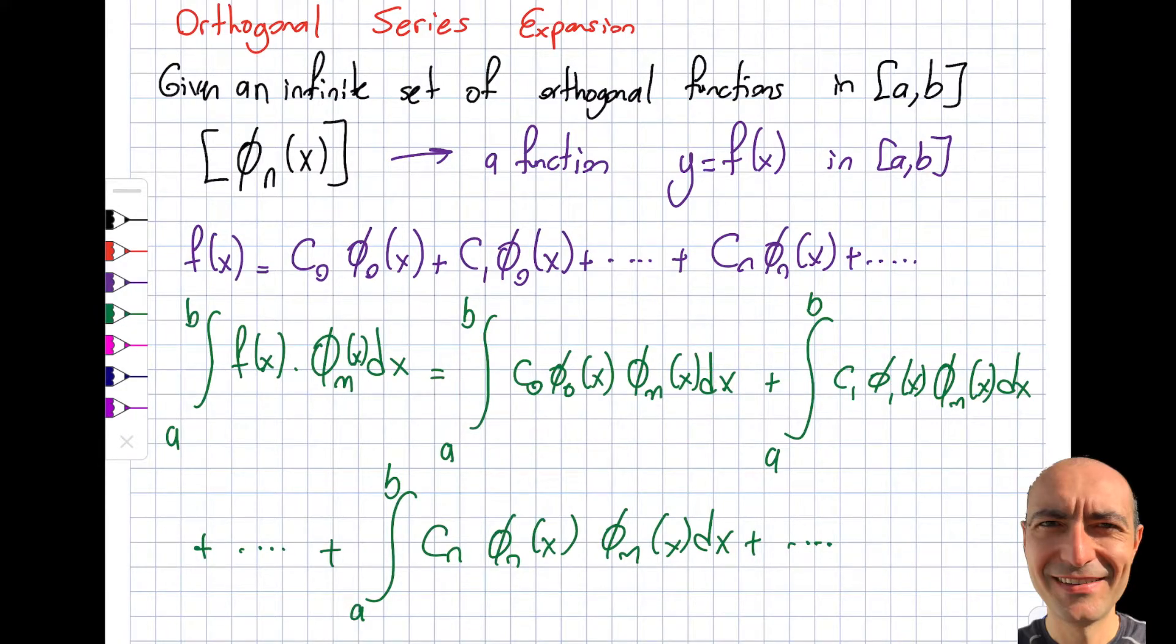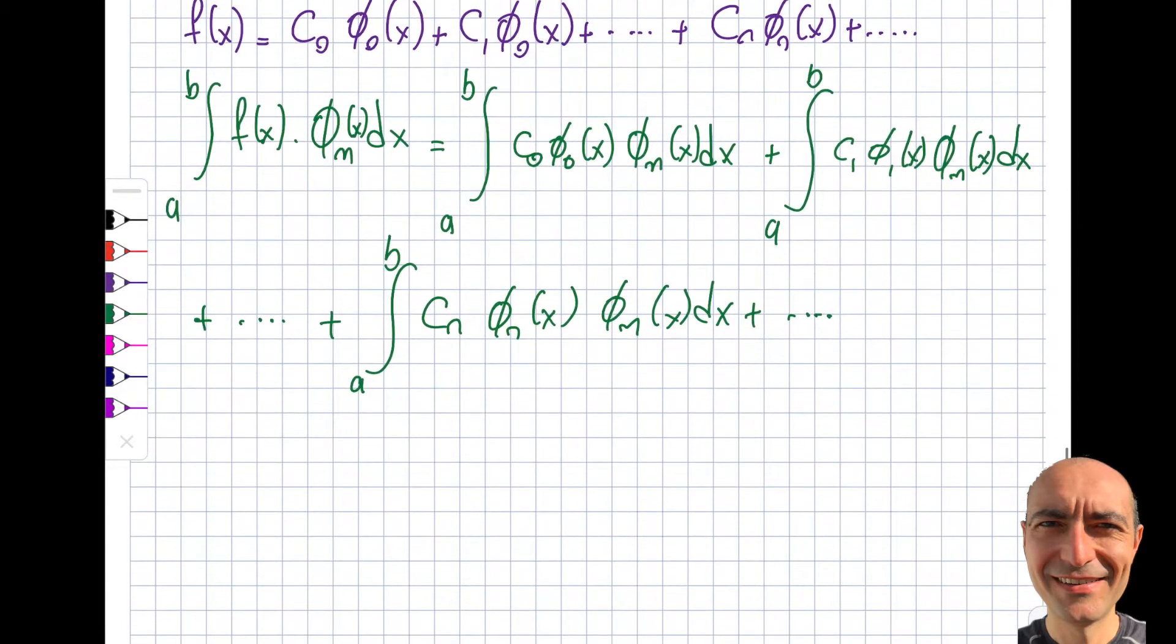And as I mentioned, like, three minutes back, the inner product of two orthogonal functions is equal to 0. So the entire right hand side of this equation will be 0, right? This will be 0 as long as n is not equal to m. Except where n is equal to m. Because when n is equal to m, I'm actually inner producting the same function, and obviously they're not orthogonal to each other, right?